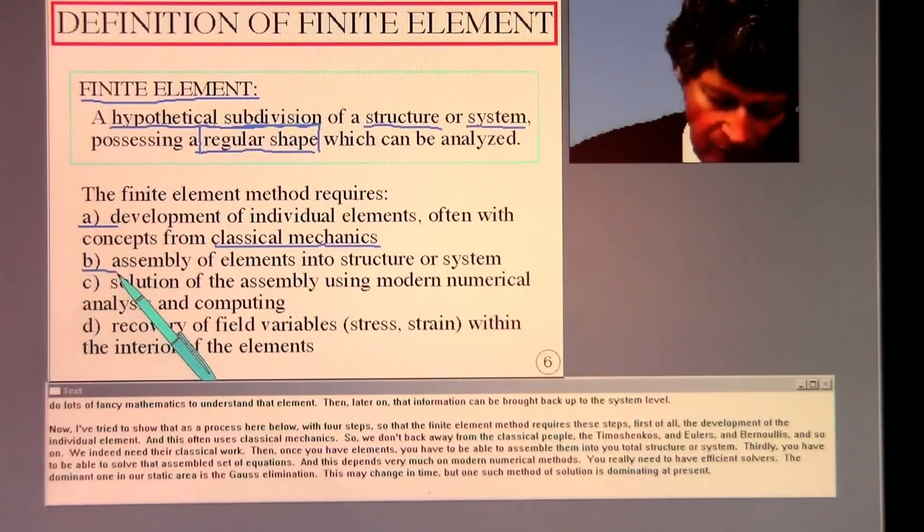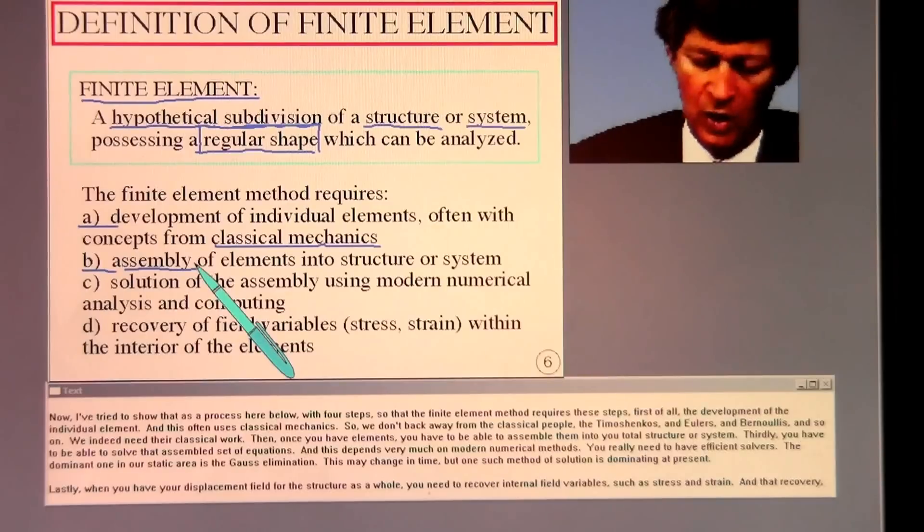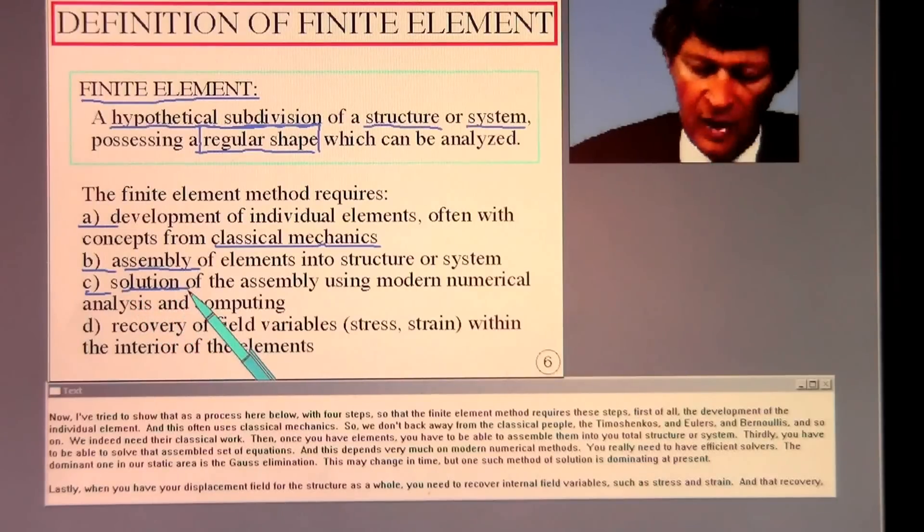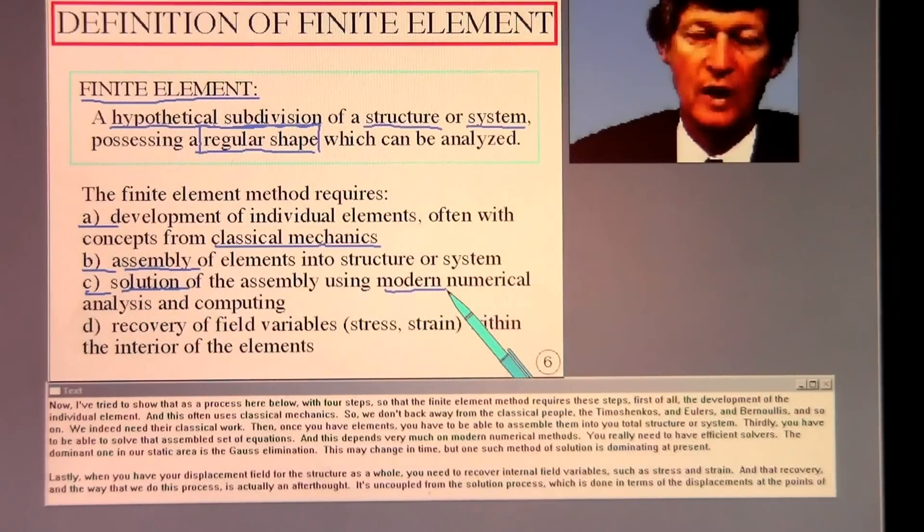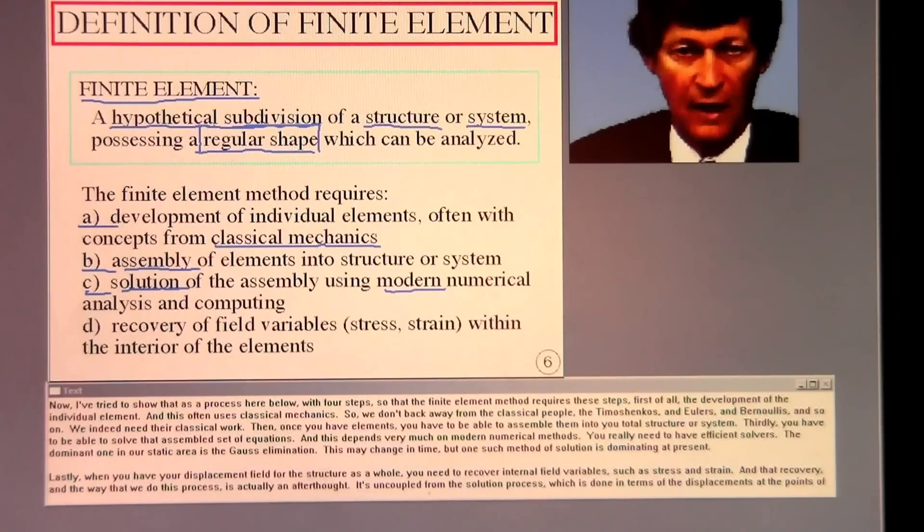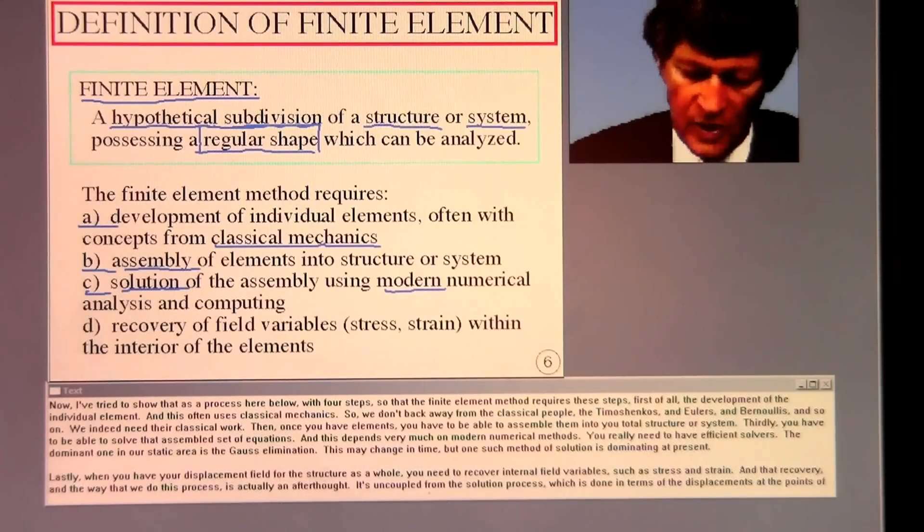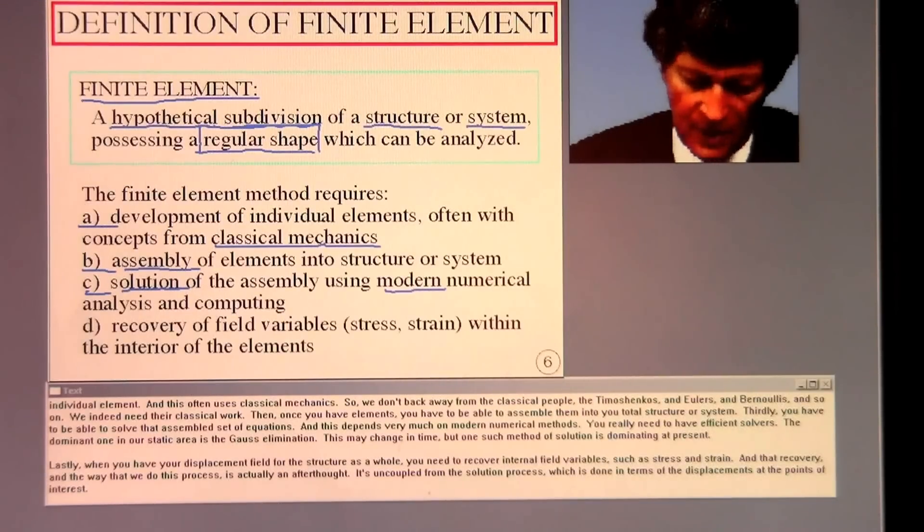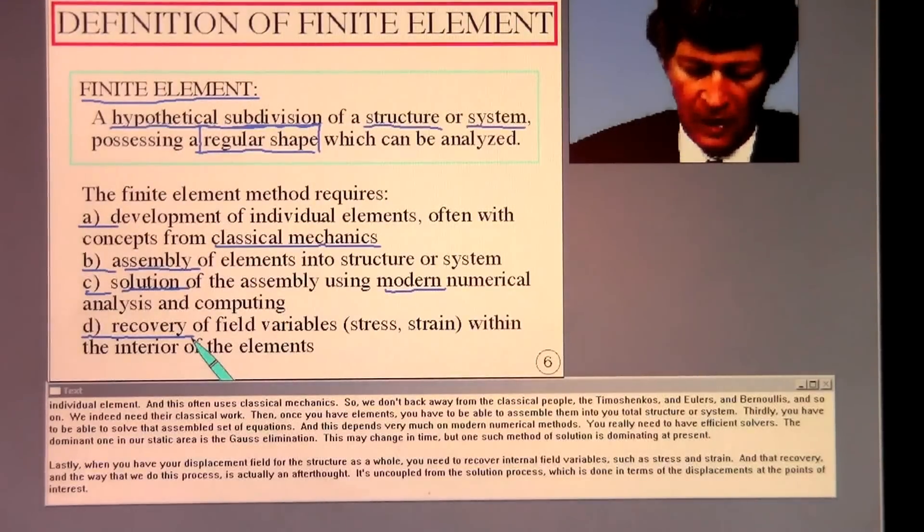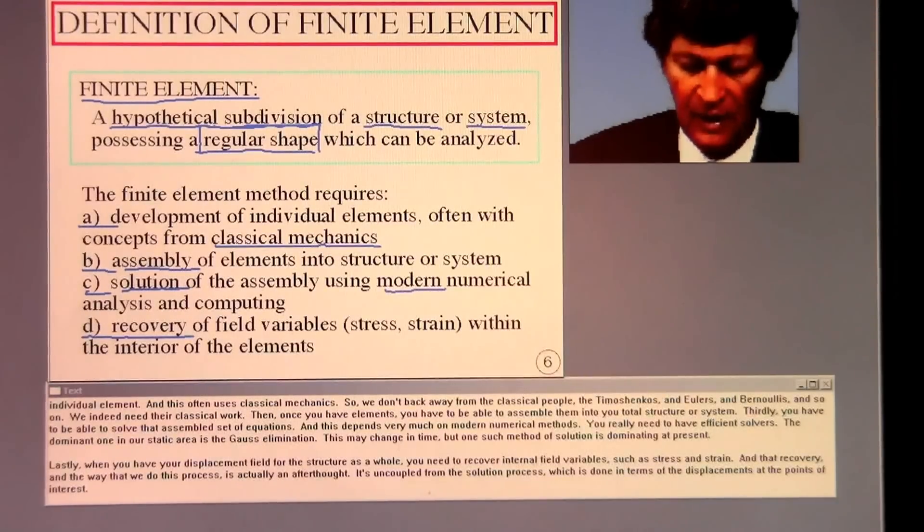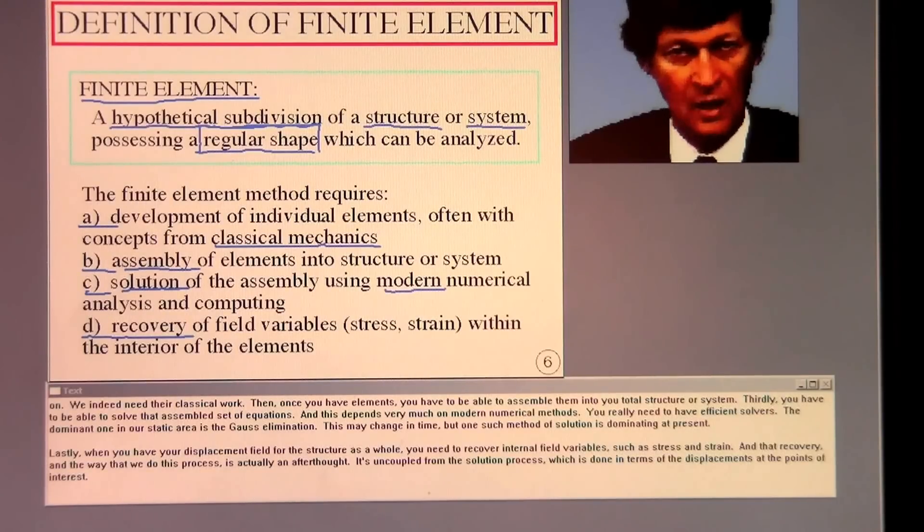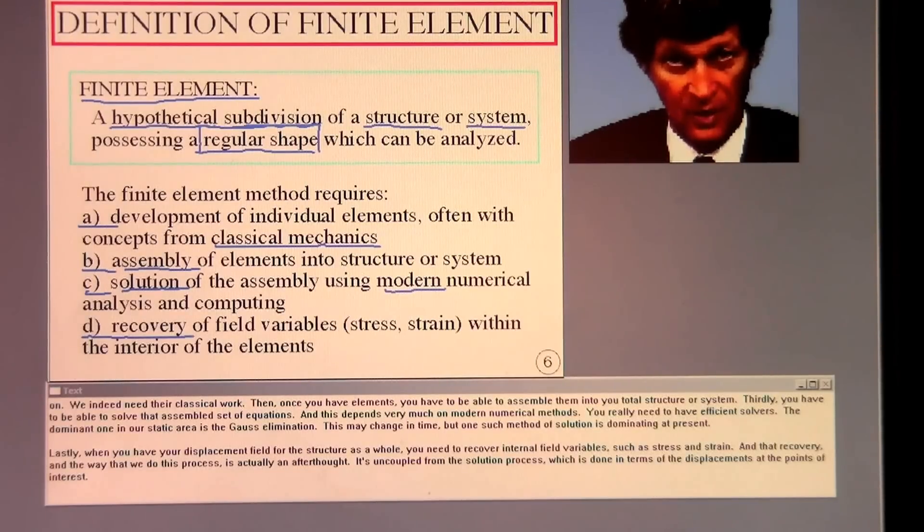Once you have elements, you have to be able to assemble them into your total structure or system. Thirdly, you have to be able to solve that assembled set of equations, and this depends very much on modern numerical methods. You really need to have efficient solvers. The dominant one in our static area is the Gauss elimination. This may change in time, but one such method of solution is dominating at present. Lastly, when you have your displacement field for the structure as a whole, you need to recover internal field variables such as stress and strain. That recovery in the way that we do this process is actually an afterthought. It's uncoupled from the solution process, which is done in terms of the displacements at the points of interest.